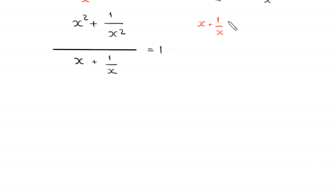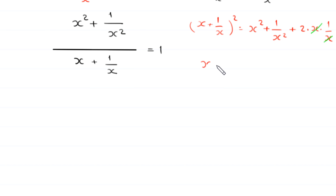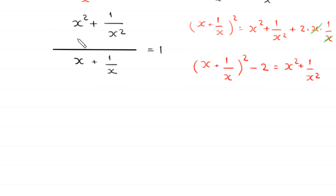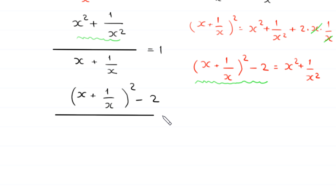We use the identity: x plus 1 over x, whole squared, equals x squared plus 1 over x squared plus 2 times x times 1 over x. So x squared plus 1 over x squared equals x plus 1 over x, whole squared, minus 2. We substitute this in the numerator, giving x plus 1 over x, whole squared, minus 2, all divided by x plus 1 over x, is equal to 1.